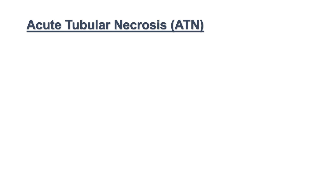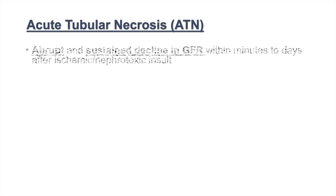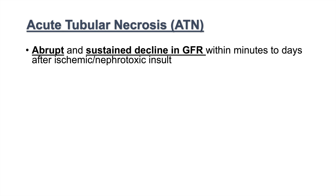Hey everyone, and this is where we're going to talk about acute tubular necrosis, or ATN. Acute tubular necrosis is an abrupt and sustained decline in glomerular filtration rate within minutes to days after an ischemic or nephrotoxic insult. That is the key in acute tubular necrosis — it is an ischemic or nephrotoxic insult.